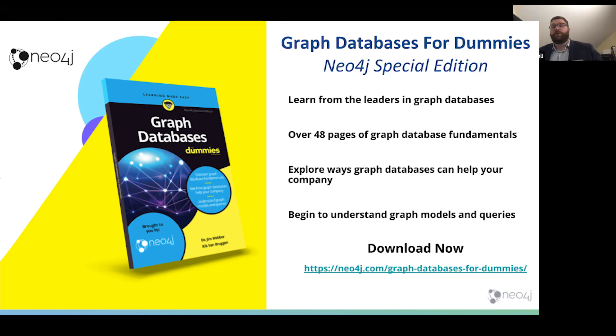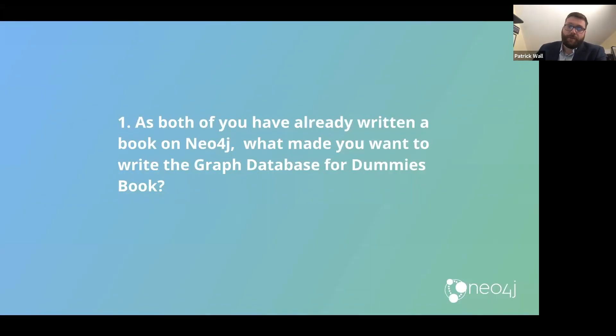For everyone who doesn't know, we just released Graph Databases for Dummies book. It's an excellent book of over 48 pages of graph databases fundamentals. It's a really great way to begin and understand graph databases. As you've already written a book on Neo4j, what made you want to write Graph Databases for Dummies?